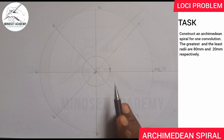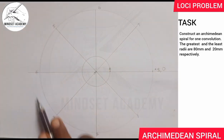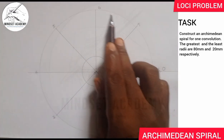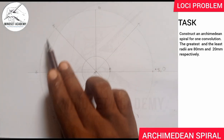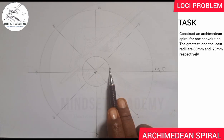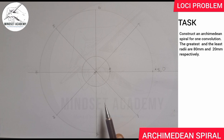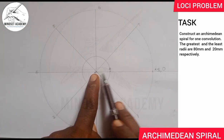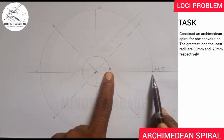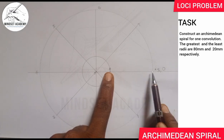Next, divide the line segment between B and A into the same number of divisions as the circle — in this case, 8. If the circle were divided into 12, you'd divide A to B into 12 as well. Note: if no shortest radius were given, you'd divide from O to A. Since both shortest and greatest radii are given, we divide between B and A. The distance from B to A is 60 millimeters (80 minus 20).